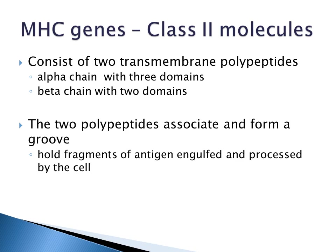The class 2 molecules consist of two transmembrane polypeptides: an alpha chain with three domains — alpha 1, 2, and 3 — and a beta chain with two domains, beta 1 and beta 2. The two polypeptides associate and form a groove that will hold fragments of antigen that have been engulfed and processed by the cell.